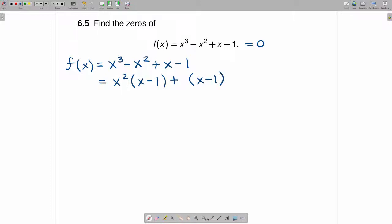Now notice what you have here. You have x² times (x - 1) plus 1 times (x - 1). So now I'm going to factor an (x - 1) out of both of those terms, and it boils down to this.